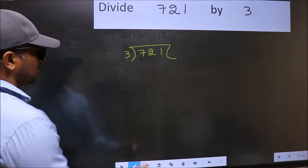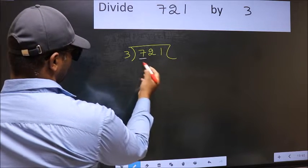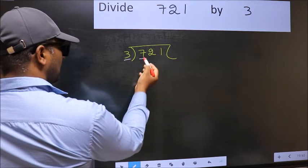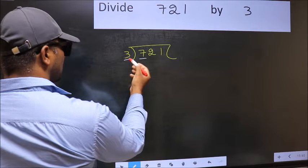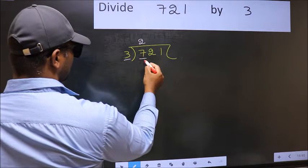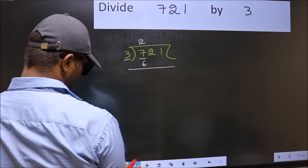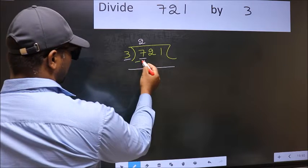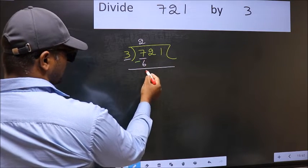Next, here we have 7 and here 3. A number close to 7 in 3 table is 3 twos, 6. Now you should subtract 7 minus 6, 1.